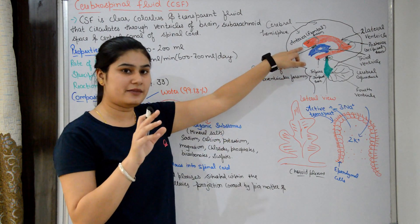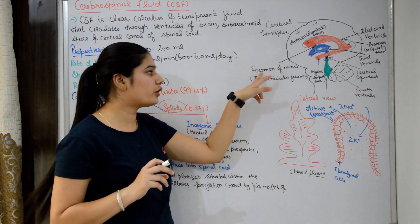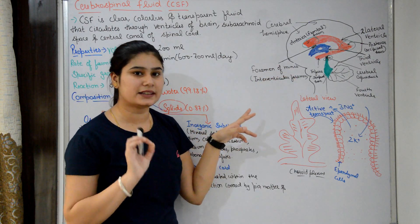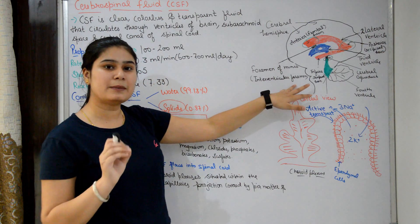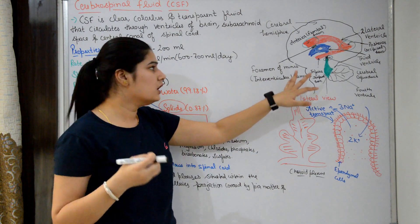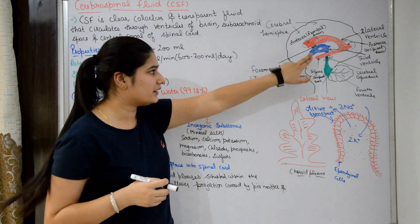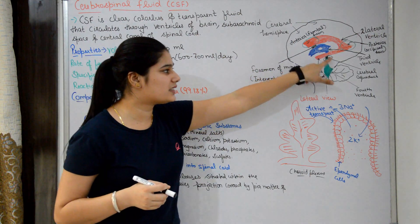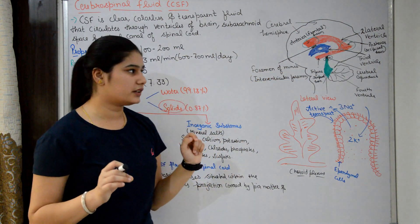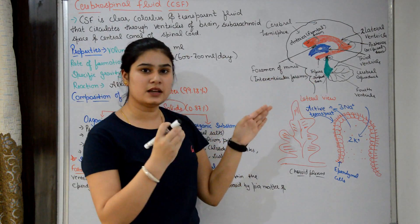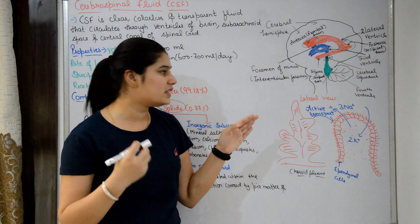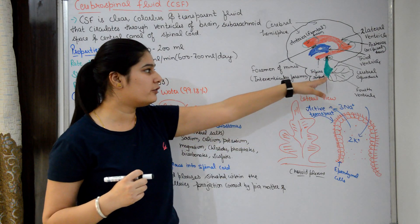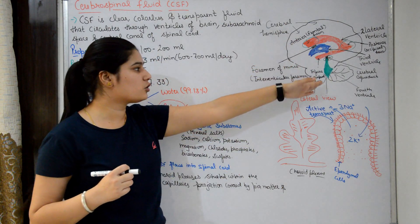Foramen means opening or hole. The two lateral ventricles connect to the third ventricle through the Foramen of Monroe, also called the interventricular foramen. The third ventricle then connects to the fourth ventricle through the cerebral aqueduct. From the fourth ventricle, there are openings through which CSF travels into the subarachnoid space and the spinal cord.